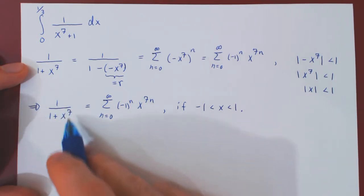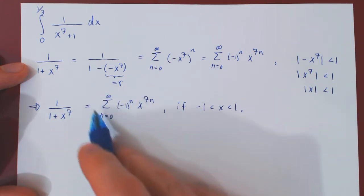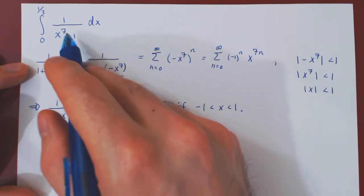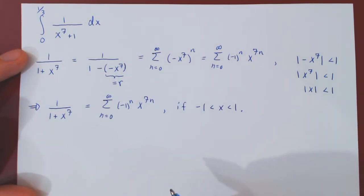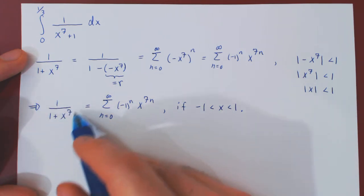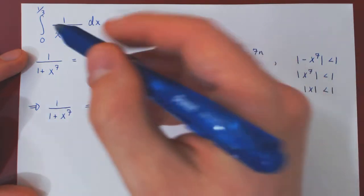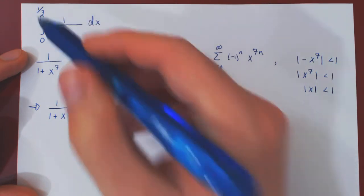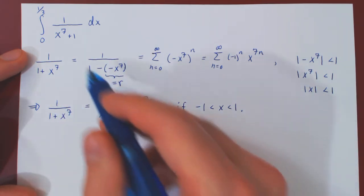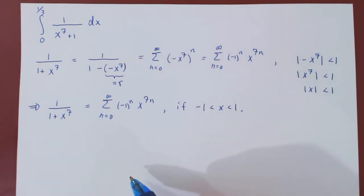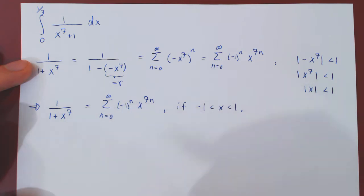We have now expressed the function we are trying to integrate as a power series on this interval. Can we use this representation to integrate it? The answer is yes, because our range of integration from 0 to a third is part of our interval. If we went from 0 to 3, the interval would be outside the range of the representation and we could not use it. But since 0 to a third lies within our interval, we can perform the substitution.